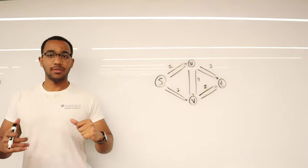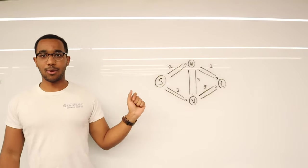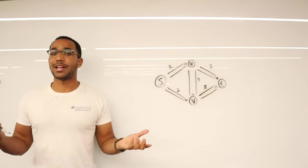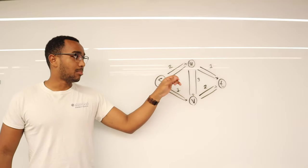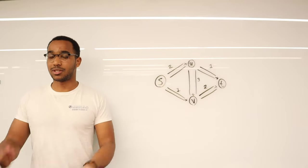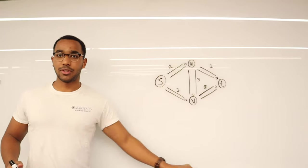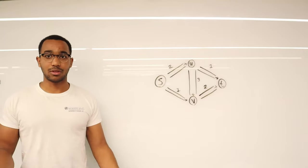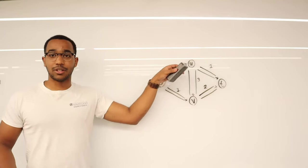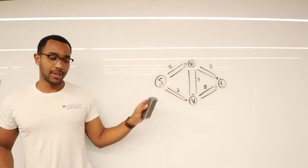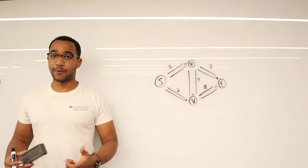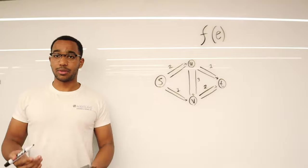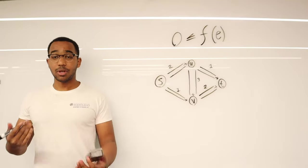This is the visualization we should have in our heads when we see this network. Right now there's no flow going through it. Flow is a conceptual unit quantity we're going to push — imagine it as water. These pipes have a certain capacity, and we cannot push more than the capacity of a pipe at any single moment in time. Each edge will have a certain amount of flow going through it, denoted as F of E.